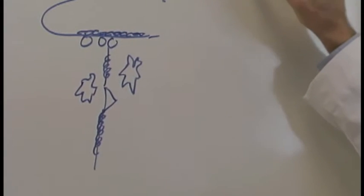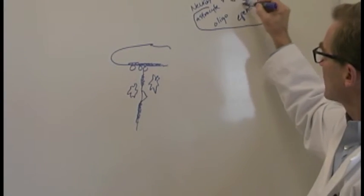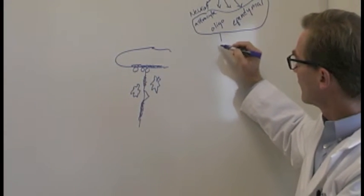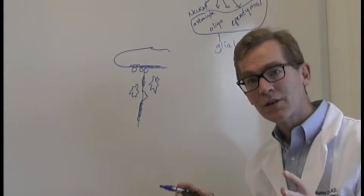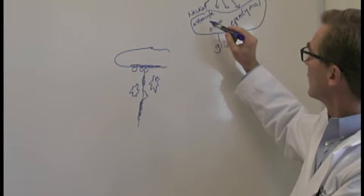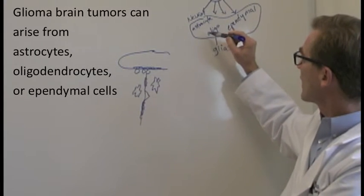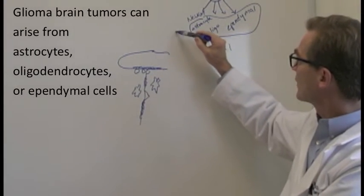So these guys - astrocytes, oligo cells, and ependymal cells - are called glial cells. And a brain tumor that's called a glioma can be similar or derived from any of these cells, but not really from a neuron.